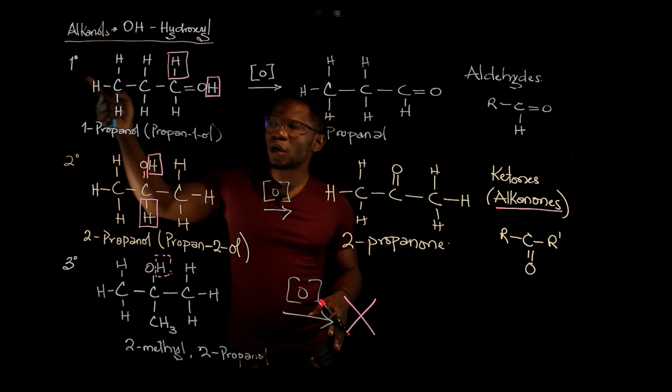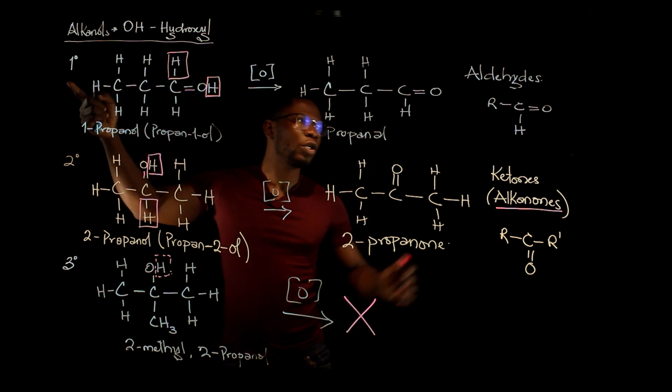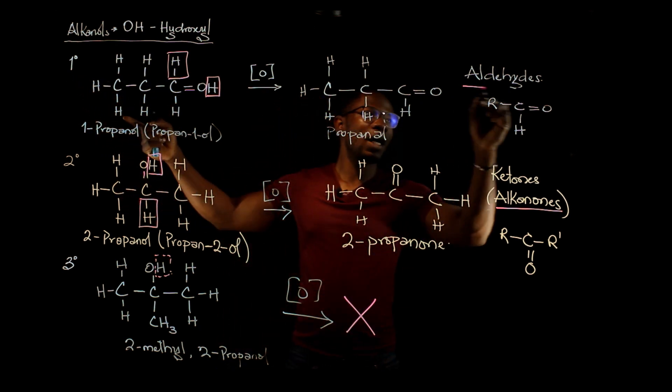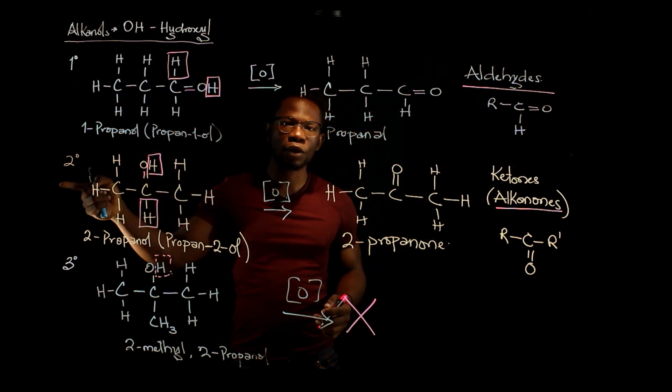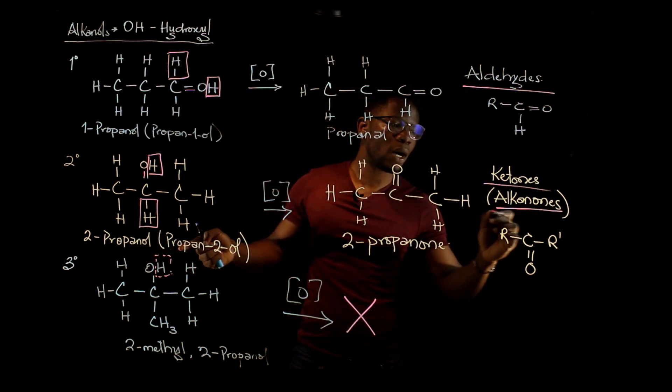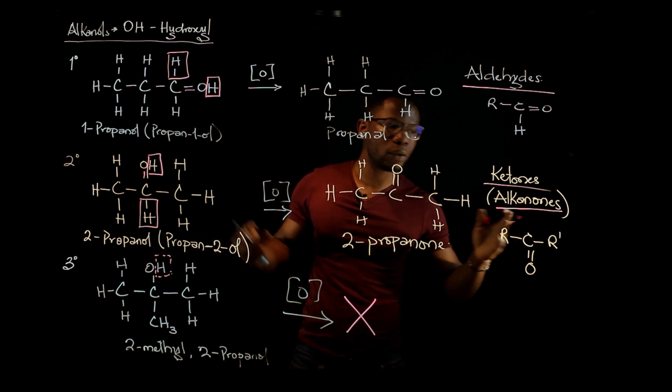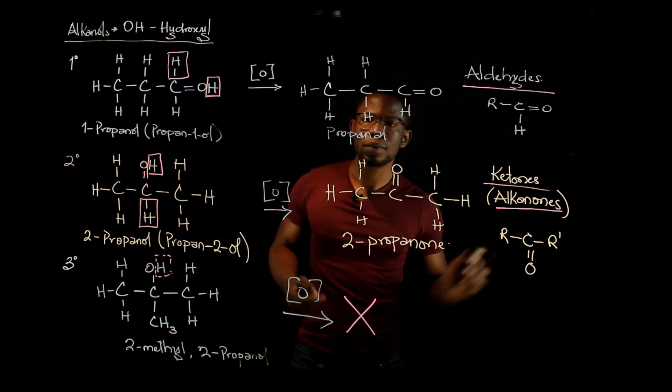When you oxidize a primary alcohol, you get an aldehyde. When you oxidize a secondary alcohol, you get ketones, also called alkanones.